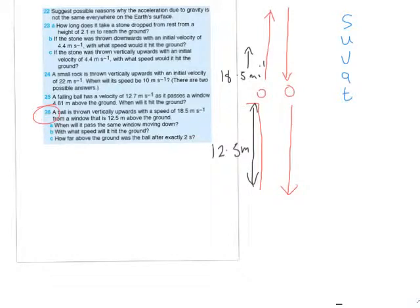Now, the first part, A, asks, when will it pass the same window moving down? So in that situation, we're going to consider this stage here. And I'm going to complete the table. So you can see our displacement is 0, because it's reaching the same point. So its total displacement from the original position is 0.